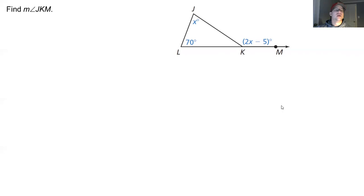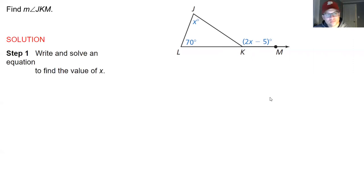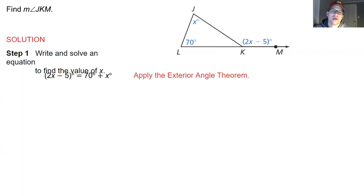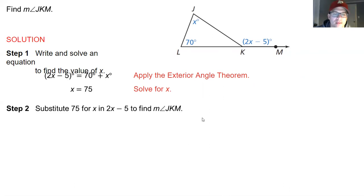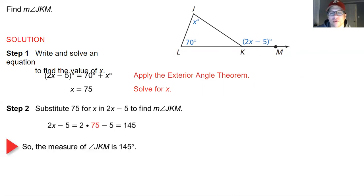Using the exterior angle theorem to find the measure of angle JKM: we create an equation by setting the exterior angle equal to the sum of the two non-adjacent interior angles. So 70 + x = 2x - 5. Subtracting x from both sides: x = 75. But wait — subtract x from both sides gives 70 + 5 = x, so x = 75. Then substituting back: 2(75) - 5 = 145 degrees.